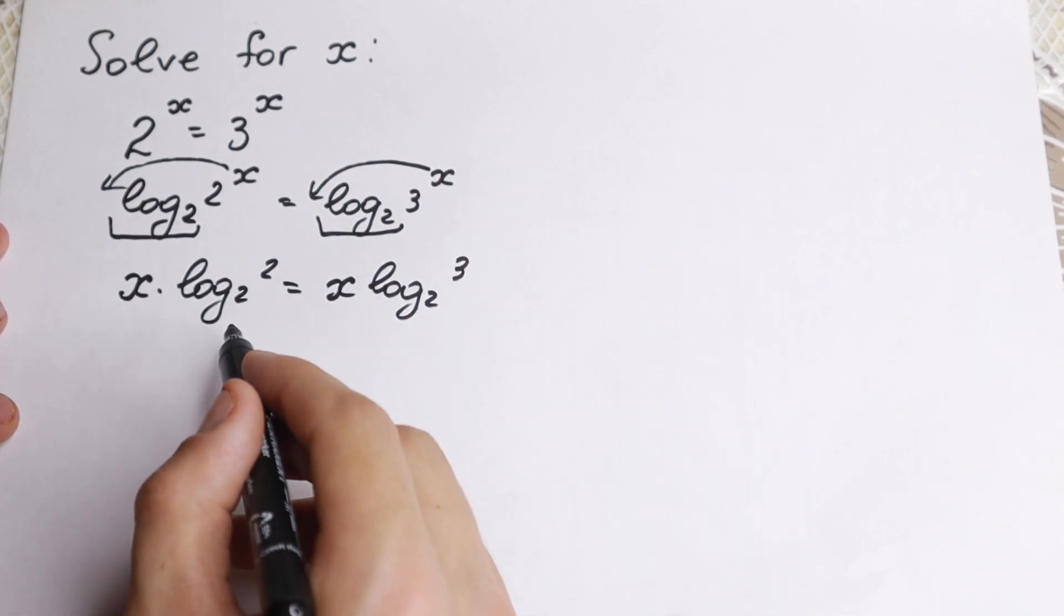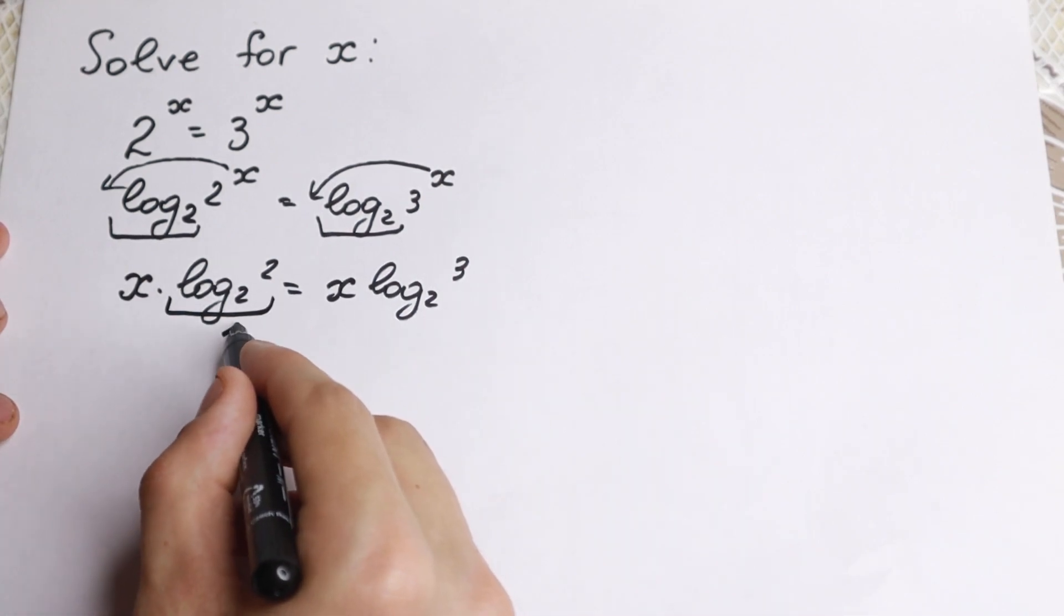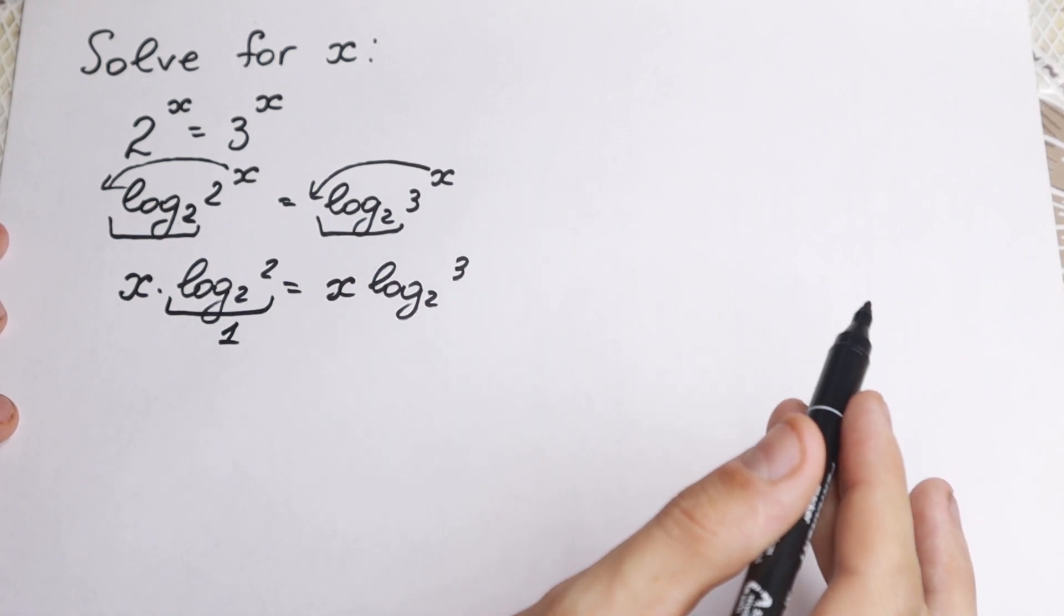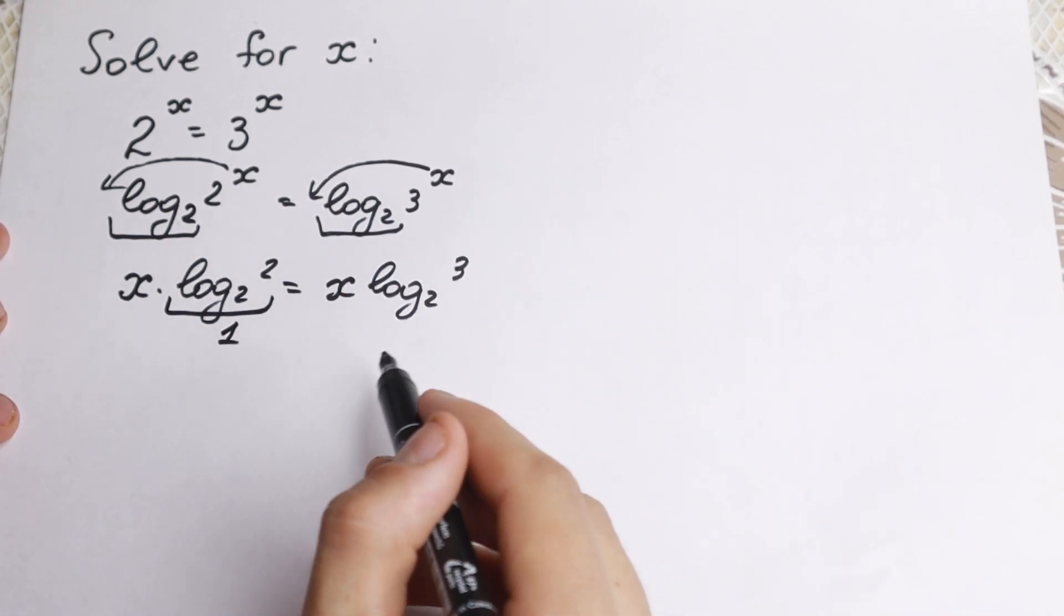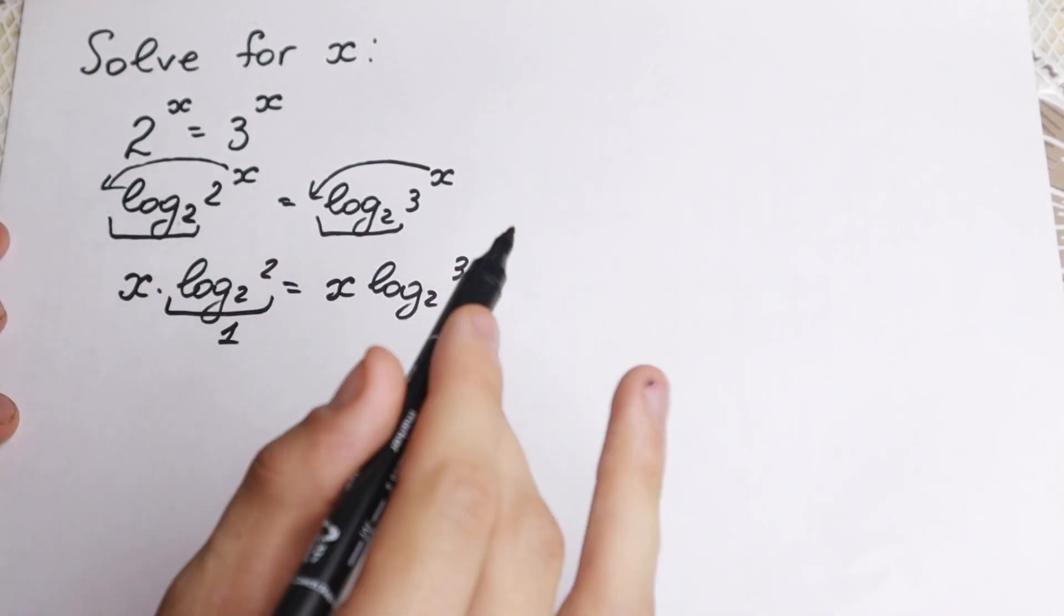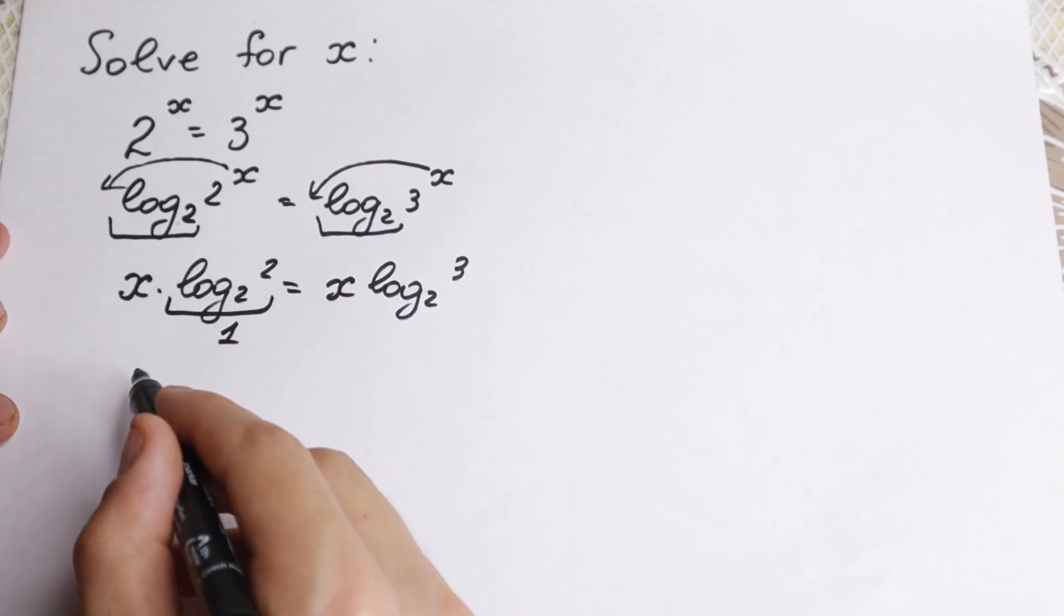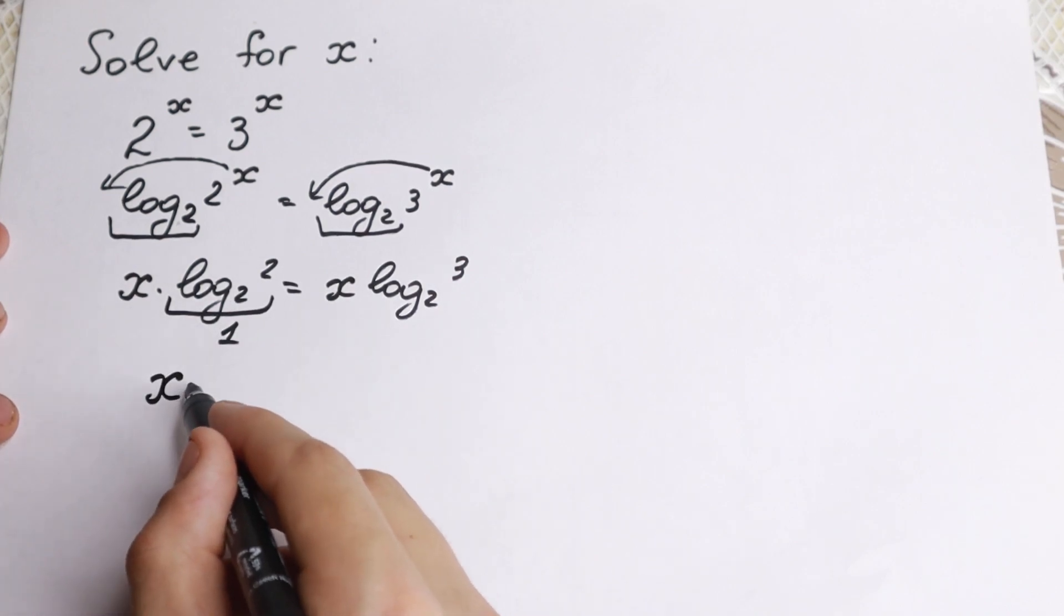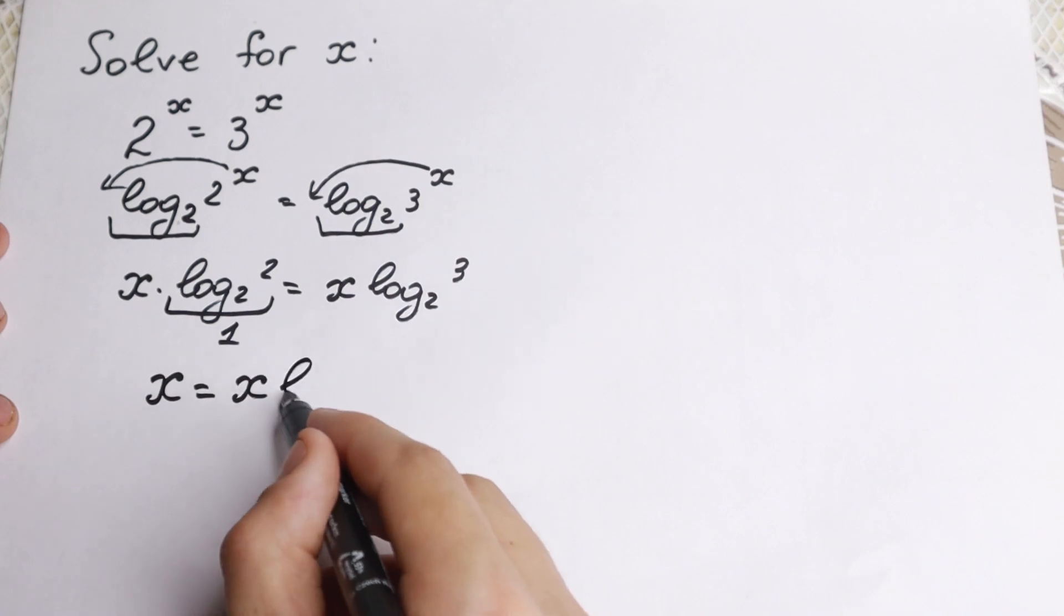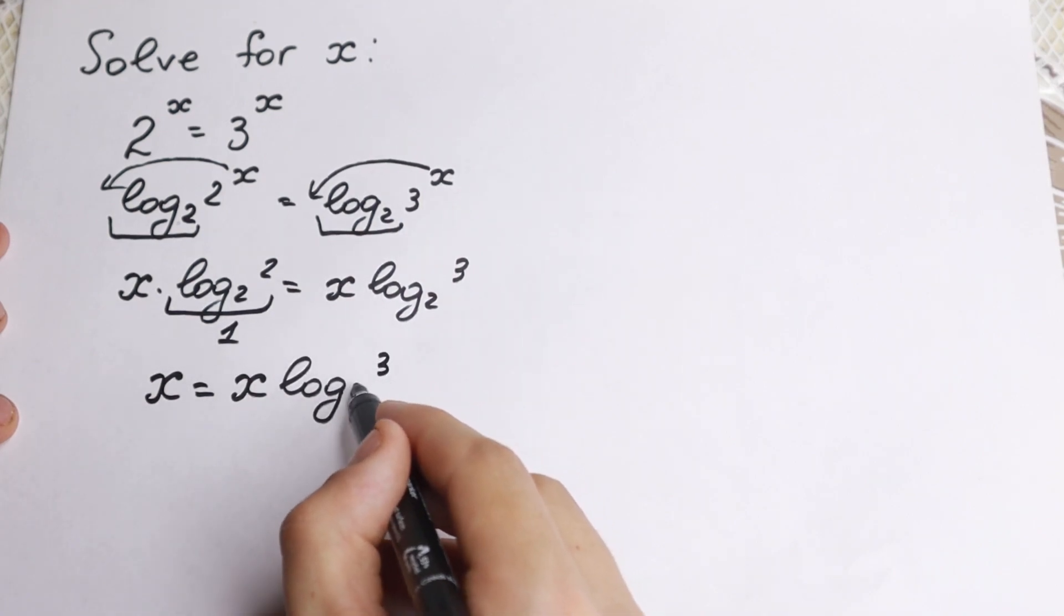But first of all I want to mention that log 2 base of 2 equal to 1. We need to know it: log a base of a equal to 1, doesn't matter of this a, 2, 3, 4, doesn't matter, the number equal to 1. So we will have x equal to x times logarithm 3 base of 2.